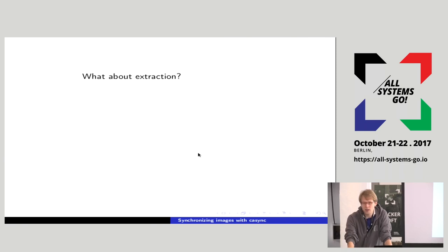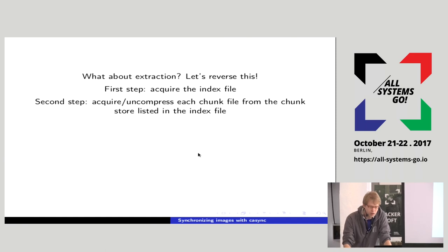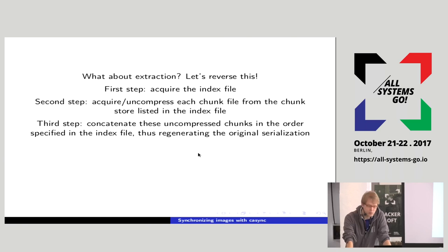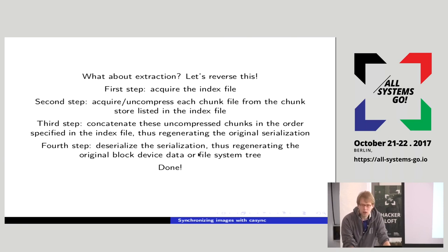So to recapitulate: we serialized everything, chunked it into pieces, calculated the hash of each piece, noted the hash in the index file, compressed individual chunks and dropped them into individual files in the directory. That's what happens when you package a directory tree or file system image with CISync. As input you put the data in; as output you get one index file and one store directory. The chain is: serialization, chunking, hashing and indexing, and compression storage. Extraction simply reverses this: acquire the index file, acquire and uncompress each chunk listed in it, then deserialize to regenerate the original block device data or file system tree.